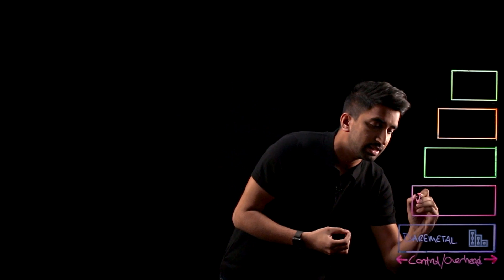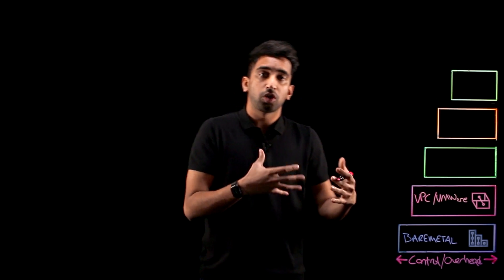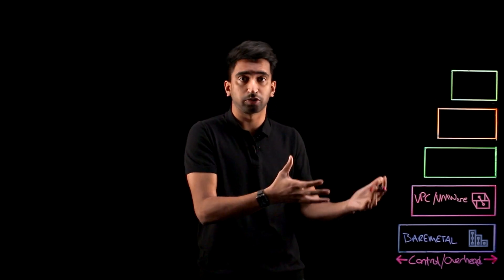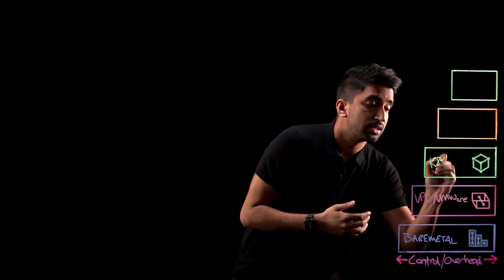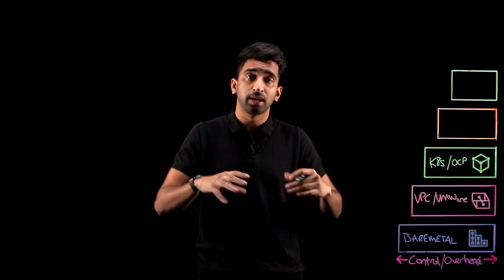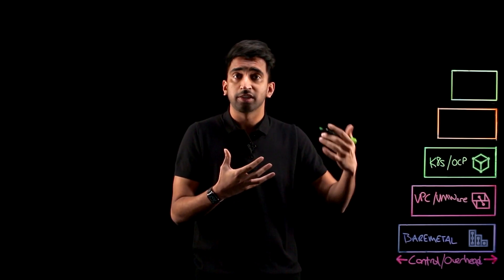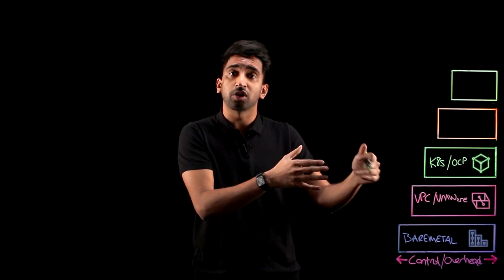Let's take it a step higher. Here, we've got things like VPC and VMware. With these solutions, you're going to have a little less overhead because there's automation that allows you to spin up the actual machines. Going a step higher, we've got solutions like Kubernetes and OpenShift Container Platform. These will allow you to get higher abstraction over the actual worker nodes — the machines that power your cluster are basically going to be managed by the platform, and you can focus on writing containers.